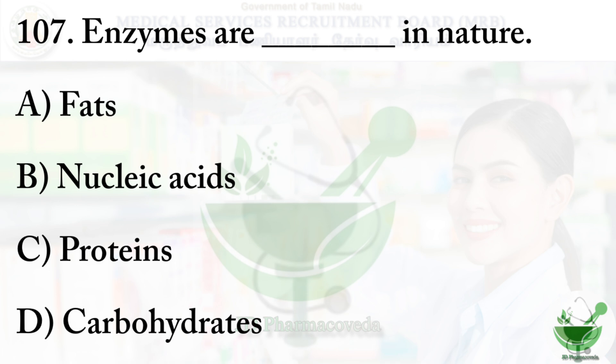Question number 107: Enzymes are dash in nature. Option A – Fats, option B – Nucleic acids, option C – Proteins, option D – Carbohydrate. The right option is option C – Proteins. There is a saying: all enzymes are proteins, but all proteins are not enzymes.